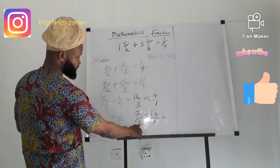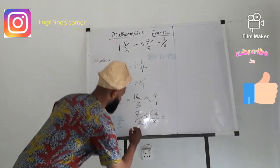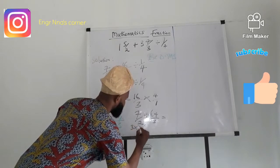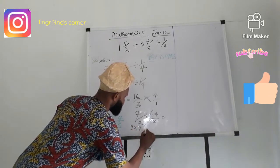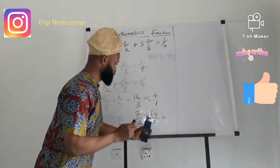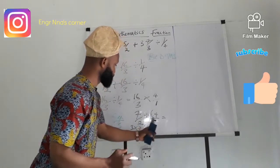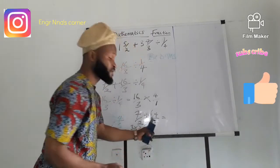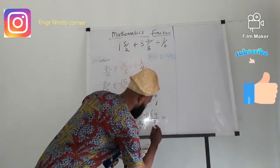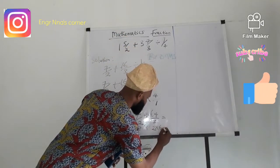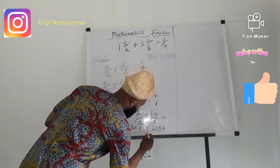6 divided by 2 would give us 3. So we have 3 times 7. 6 divided by 3 would give us 2. 2 multiply 64, all divided by 6.